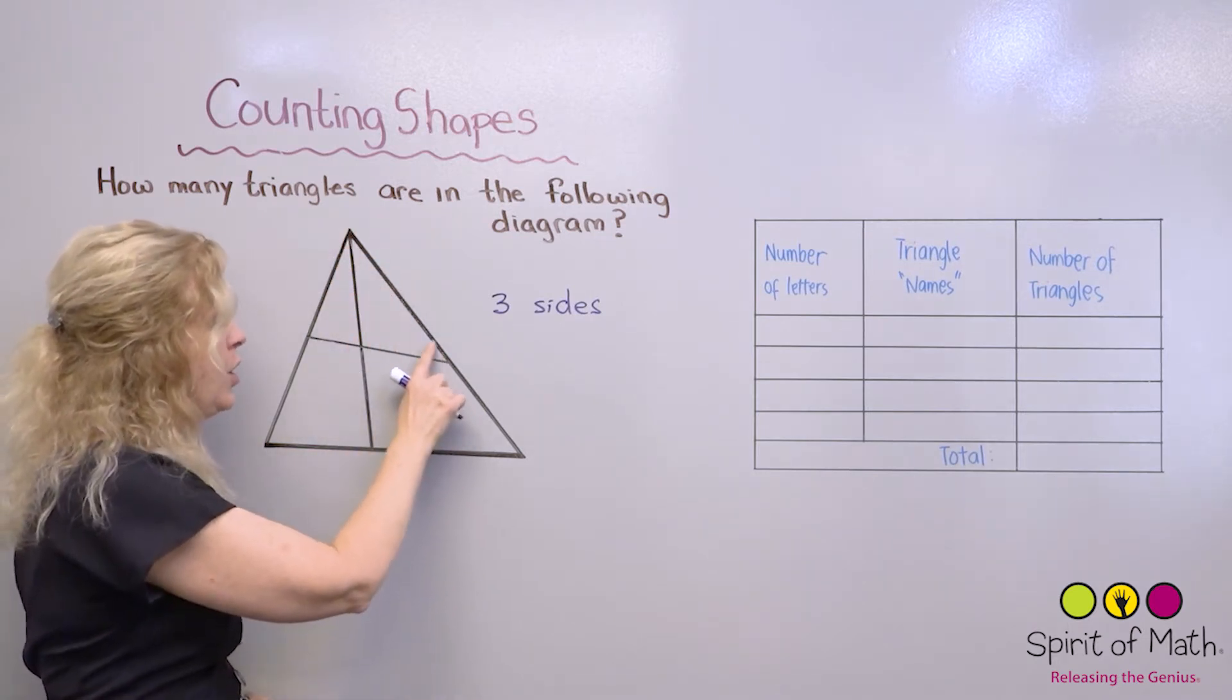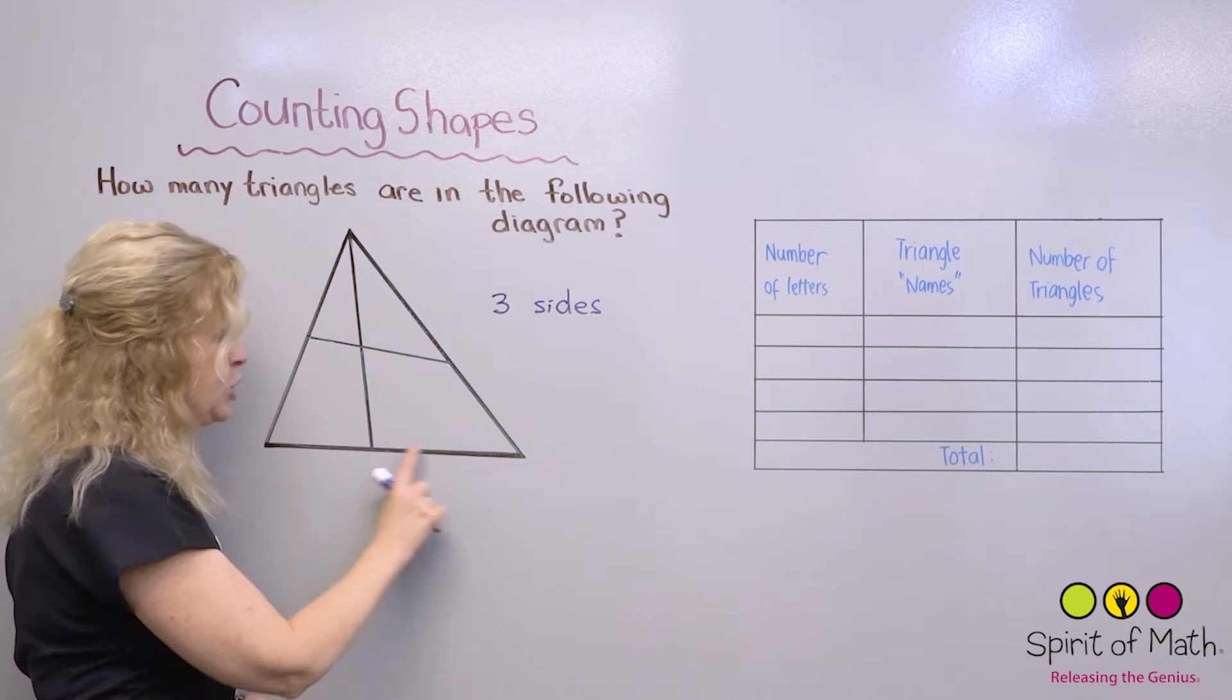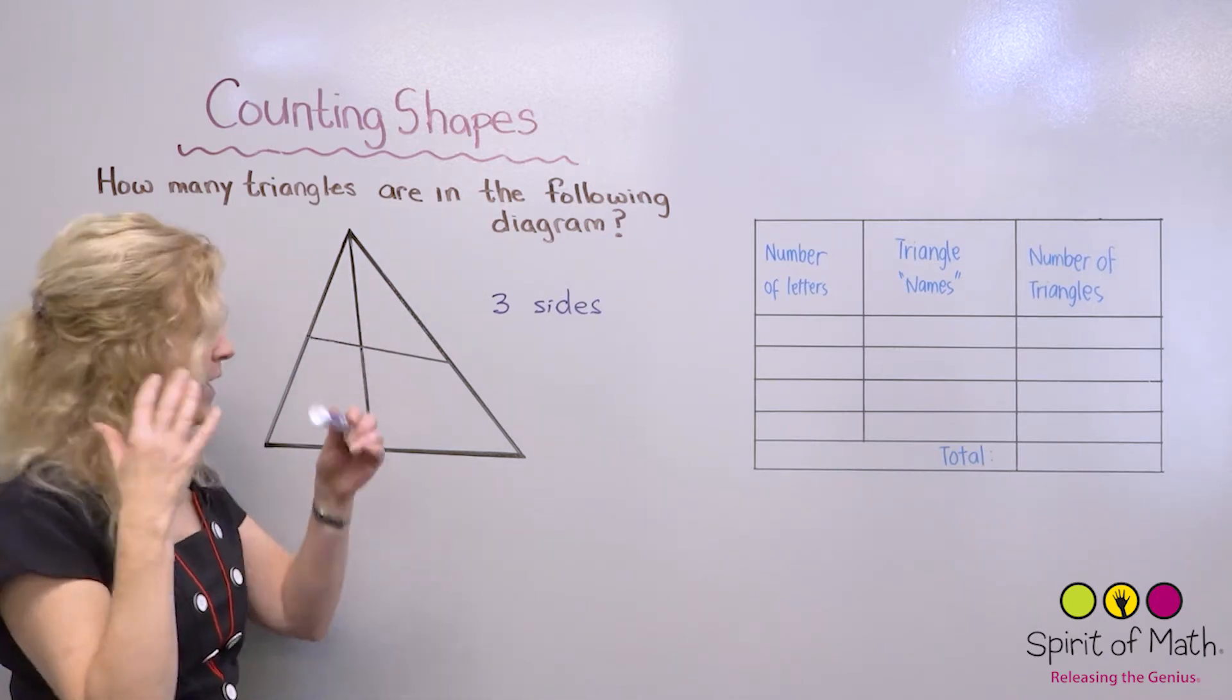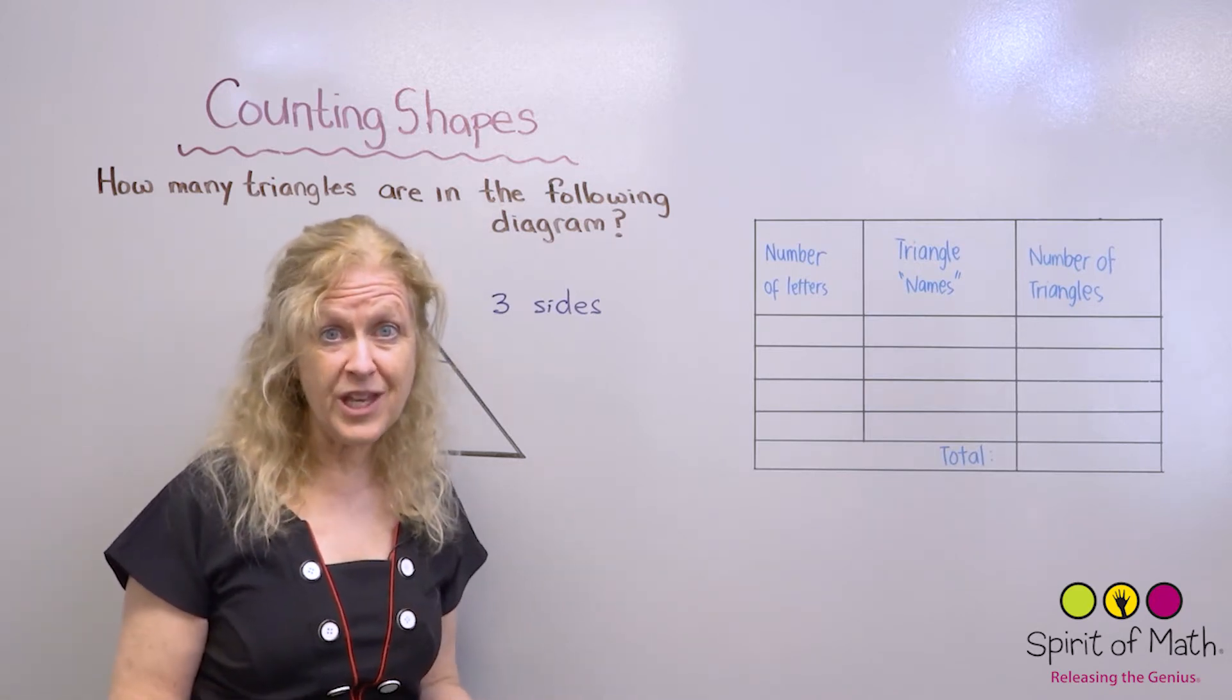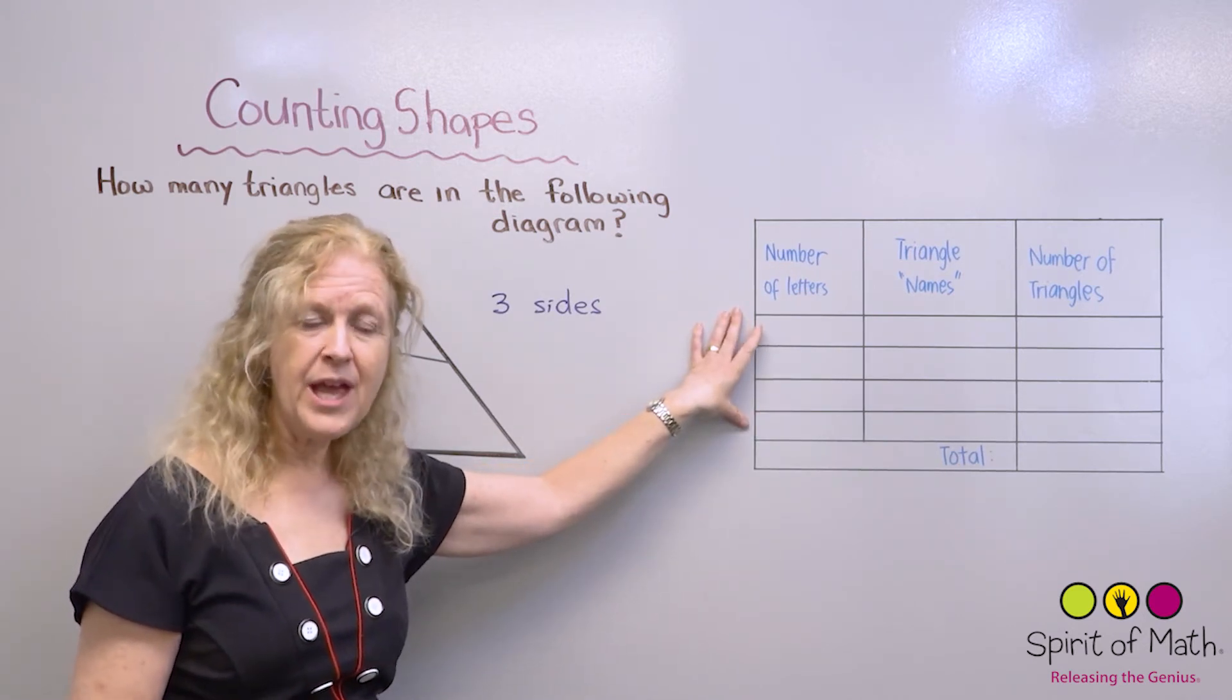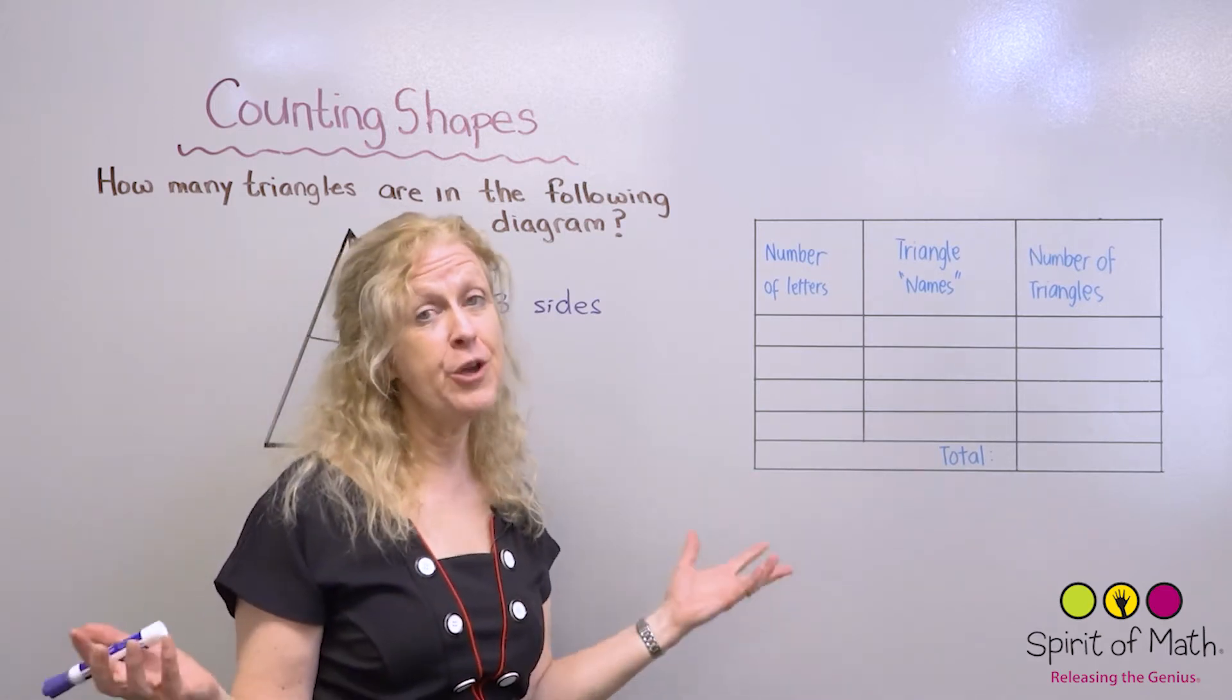Is this a triangle? One, two, three. Yes, it is. So you can count that. One, two, three. That's a triangle, too. And one, two, three. So that's three triangles so far, but there's actually more. And rather than just sort of trying to find them and then forget which ones you've counted before, there's actually a way you can do this. And it's a way using this table over here.